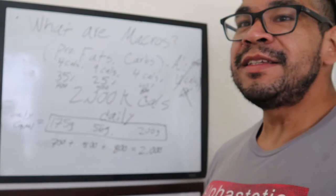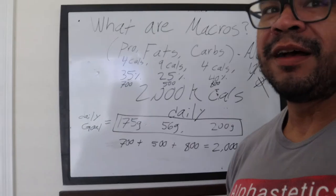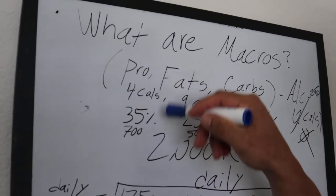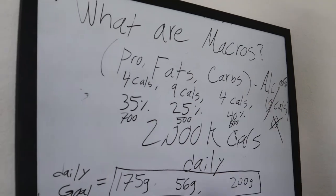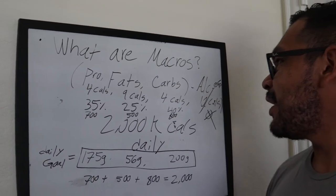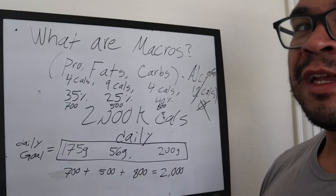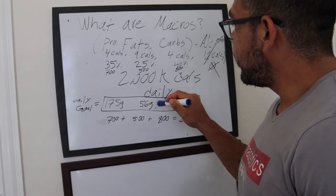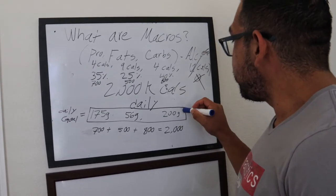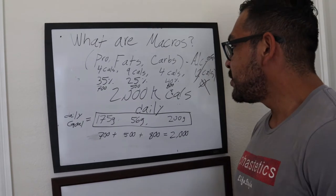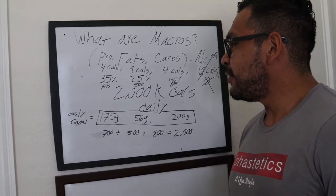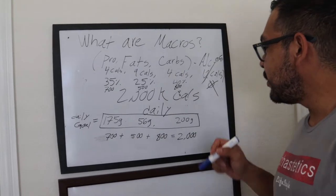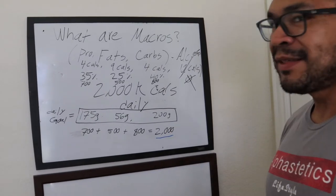Looking at our client who needs 2,000 calories a day — 35% from protein, 25% from fats, 40% from carbs — when we break it down into grams: 175 grams of protein daily, 56 grams of fat, and 200 grams of carbs. In calories that's 700 from protein, 500 from fats, and 800 from carbs, totaling 2,000 calories daily.